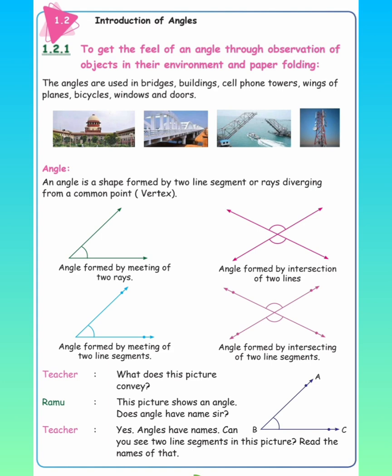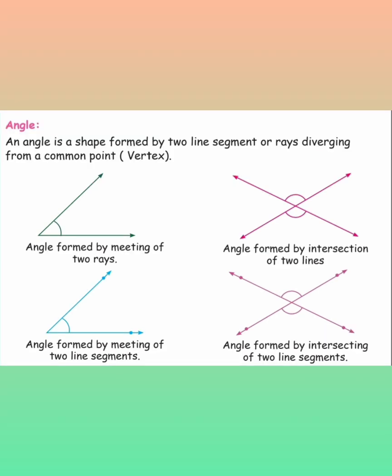What do you mean by angle? An angle is a shape formed by two line segments or rays diverging from a common point. Two line segments meet at one common point to form one angle.